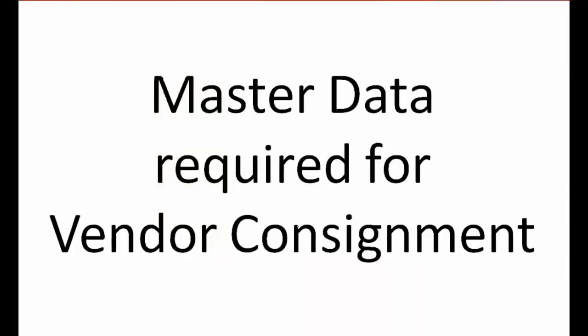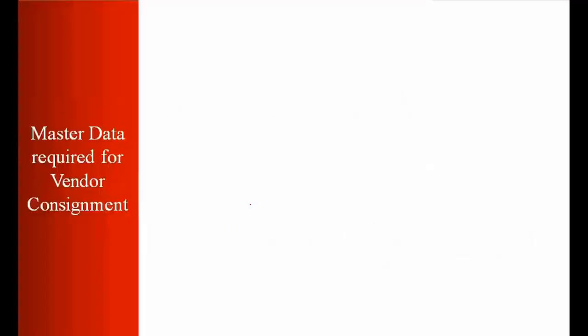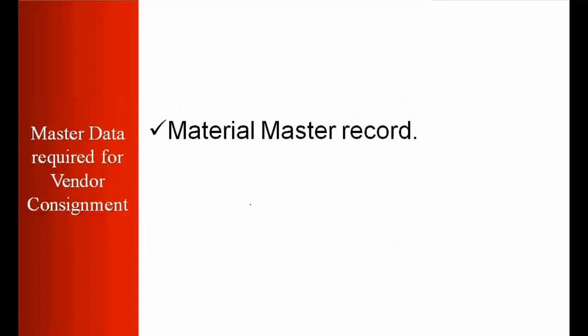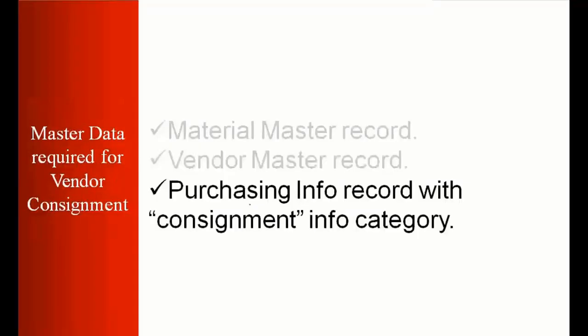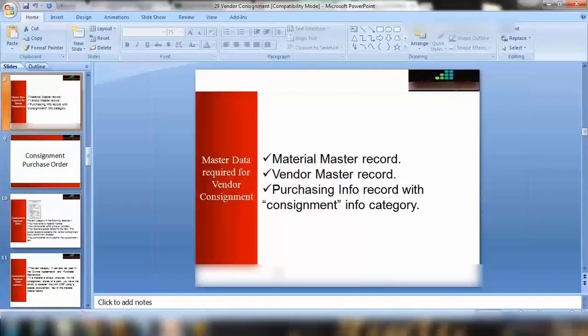First, we'll look at the master data required for vendor consignment to start a consignment purchase order. We need a material, a vendor, and importantly a purchasing info record with the consignment info category. When you create the info record using transaction M11, you need to select the consignment type. Let's do this exercise — we'll create the master data first.